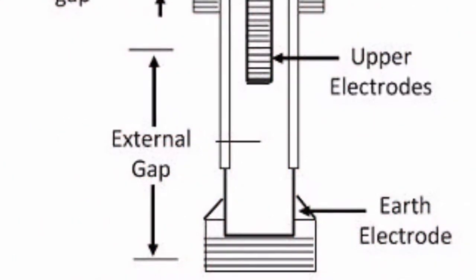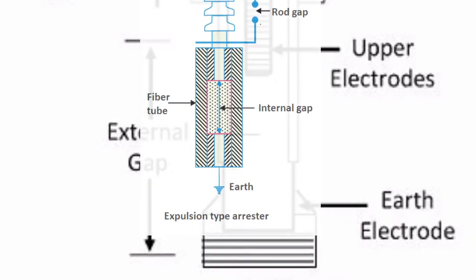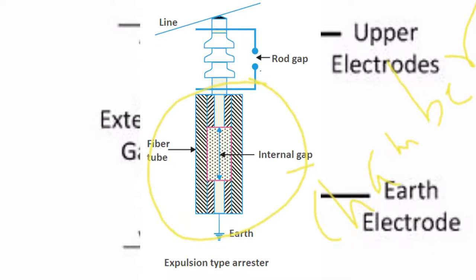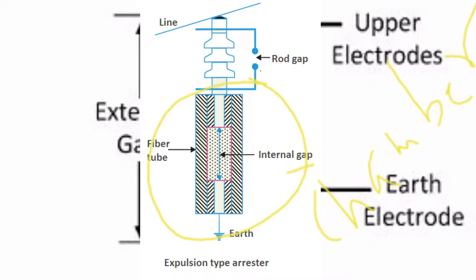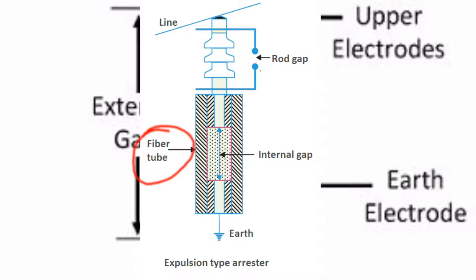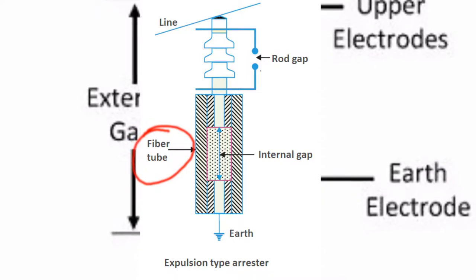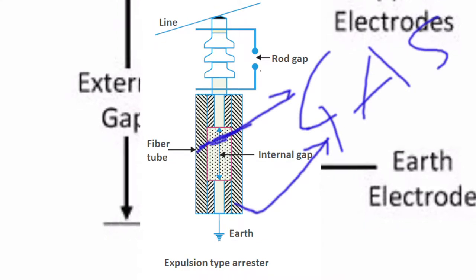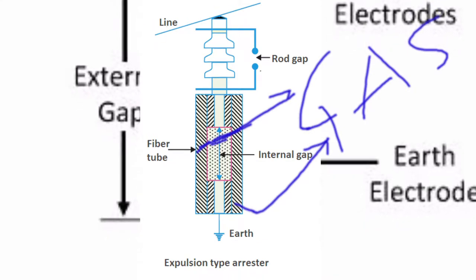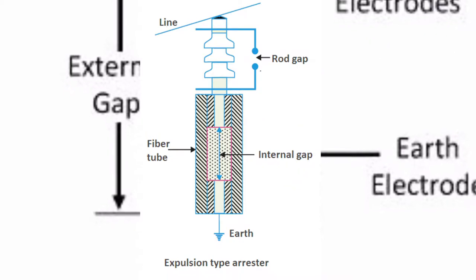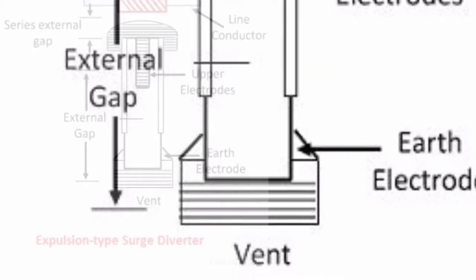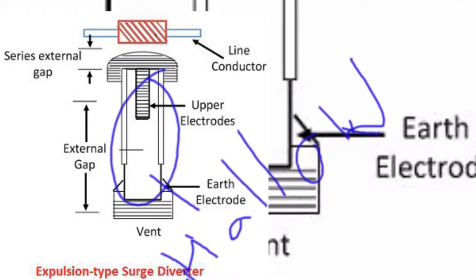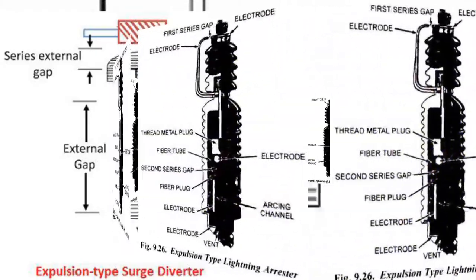This is a picture of the expulsion type lightning arrestor. The arc extinguishing chamber is in the form of a fiber tube, which interrupts the arc after discharging the surge by generation of gases. The gas produced in the fiber tube not only extinguishes the arc but also builds up high pressure and is expelled through the lower electrode, which is hollow. One end of the rod gap is connected to the tube.